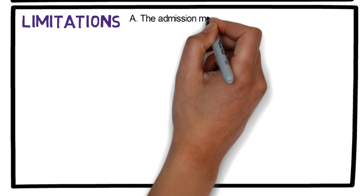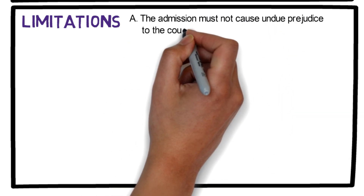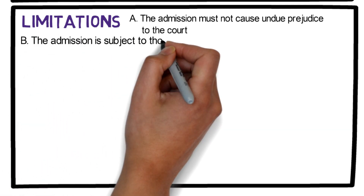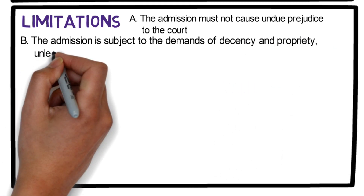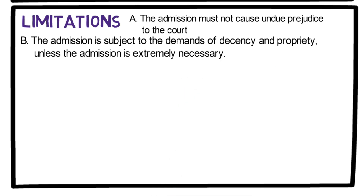First limitation: the admission must not cause undue prejudice to the court. Second limitation: the admission is subject to the demands of decency and propriety, unless the admission is extremely necessary. For example, the exhibition of the private parts in sex cases is generally not allowed.